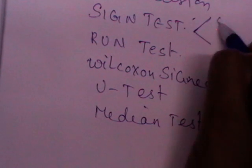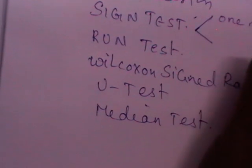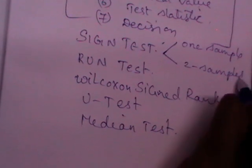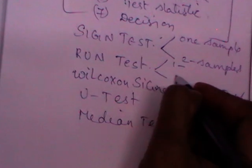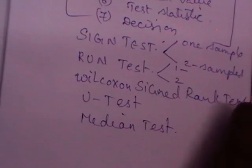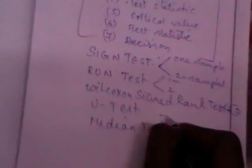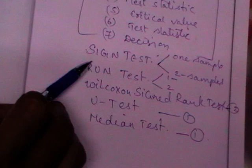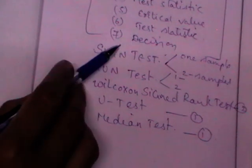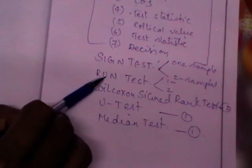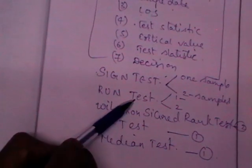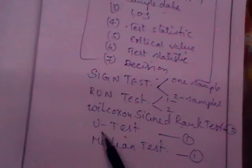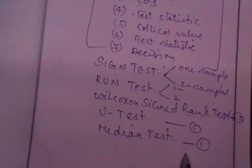Under the sign test, you will have a one-sample case and a two-sample case. The run test also has one-sample and two-sample cases. The Wilcoxon signed rank test is a single test, the U test is a single test, and the median test is also a single test.